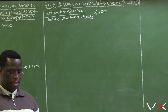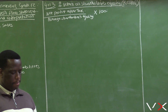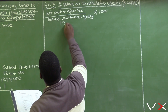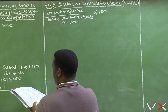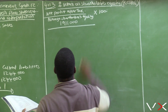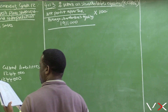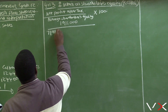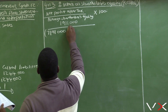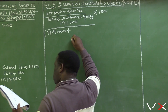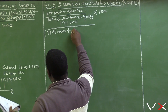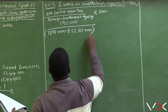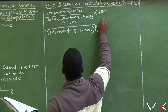From page 14, net profit after tax for 2018 is R1,911,000. Shareholders' equity for 2017 is R7,191,000 and for 2018 is R12,112,000. The average is calculated as: (7,191,000 + 12,112,000) divided by 2, multiplied by 100.